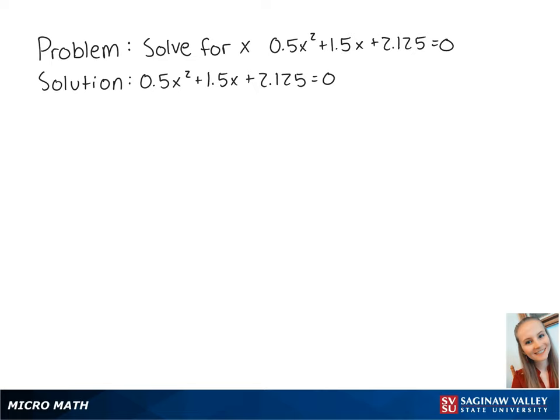For this problem, we want to solve for x in the equation 0.5x squared plus 1.5x plus 2.125 equals 0.